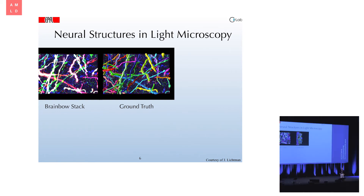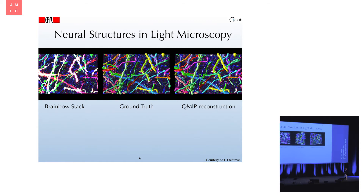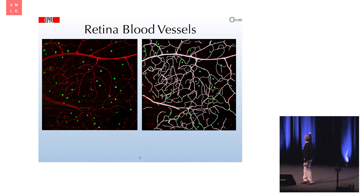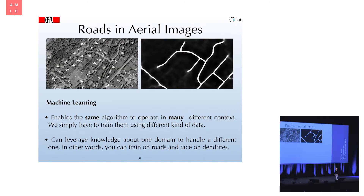Instead of an unfortunate grad student spending months tracing these by hand, we've developed an algorithm that does this automatically. The same algorithm also works on blood vessels, because blood vessels are also linear structures with a graph structure. Here is an image from which you can extract the pattern of blood vessels and detect if there is a problem. And using this same approach with an aerial image, it will find the roads, which are also linear structures forming a graph.